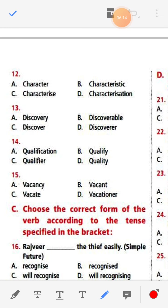Number twelve: Character, characteristic, characterize, characterization. The answer is 'characterize'. Number thirteen: Discovery, discoverable, discover, discoverer. The answer is 'discover'.